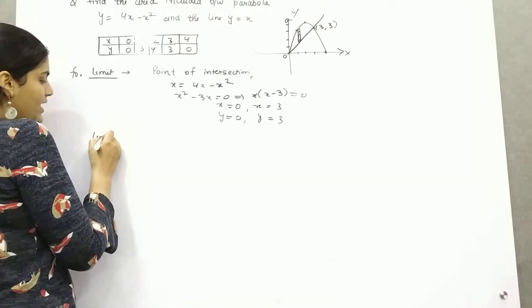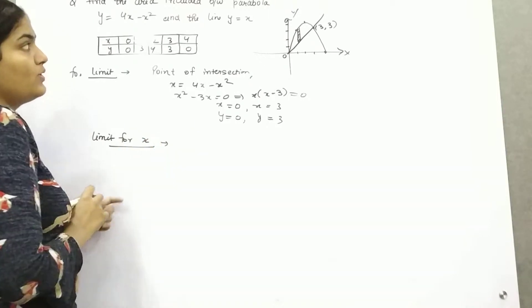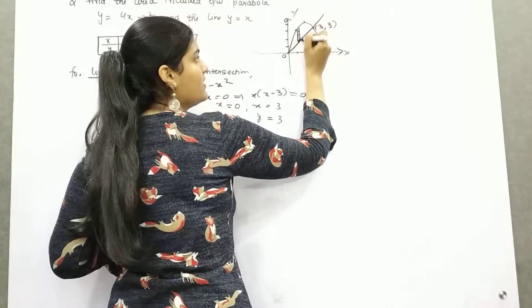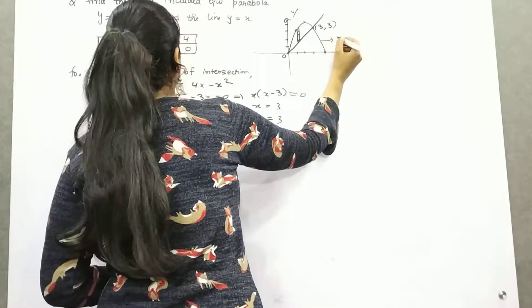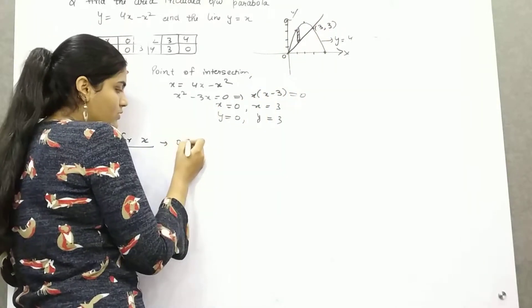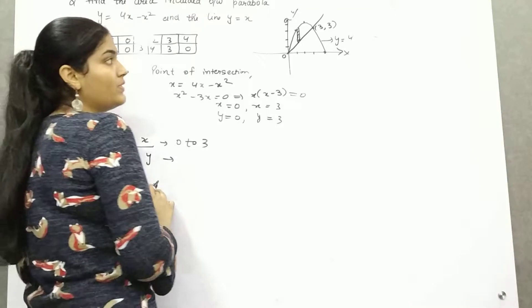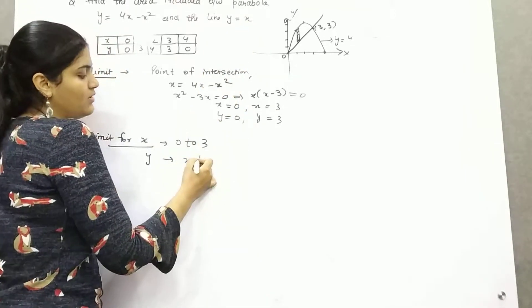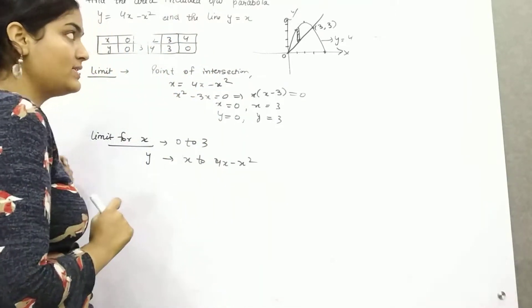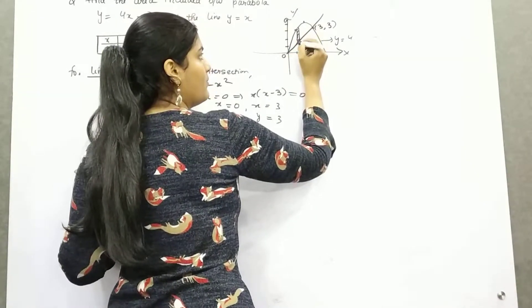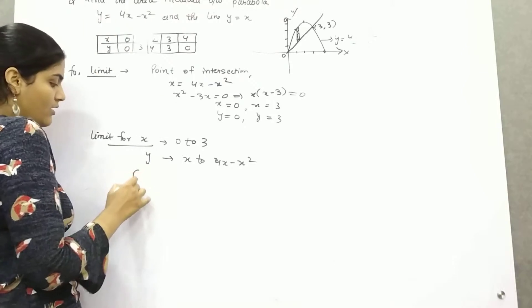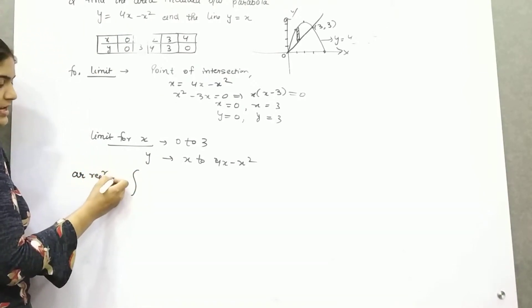So the limit for x, this is your parallel to y axis and it is moving from this curve to parabola. And the equation of parabola is y equals 4x minus x squared. So first of all, x axis is moving from 0 to 3. However, limit for y is from, if you put y equals x, then you will get 4x minus x squared. So for x, this is the point. Just moving from, if you see here, if y equals x, it is moving from x to this curve, which is 4x minus x squared.